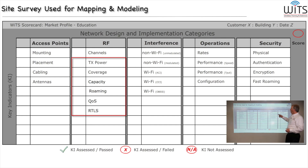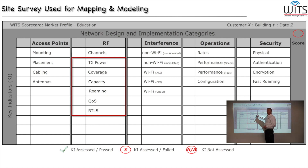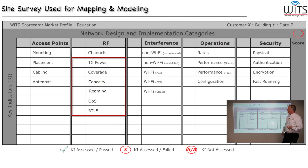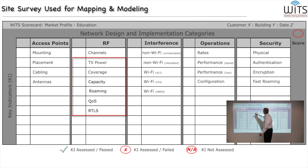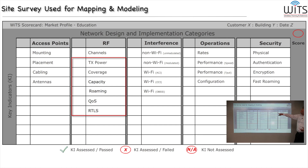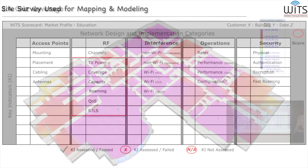By doing that we are able to follow through with our scorecard. Some of the things we couldn't tell with Wi-Fi Explorer — things like transmit power, coverage, capacity, roaming, QoS which stands for quality of service, and RTLS which stands for real-time locationing services — those were outside the scope of this original project. But one thing we were able to tell: channels were important.